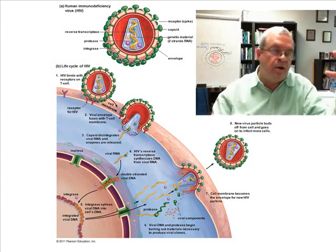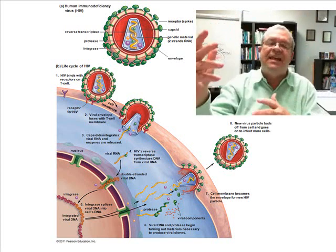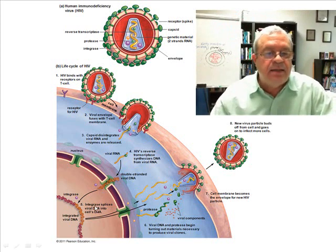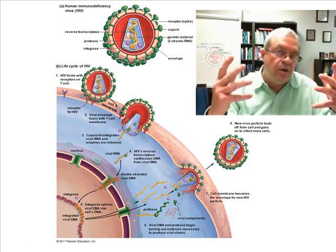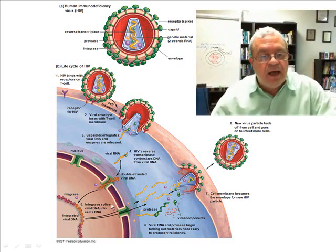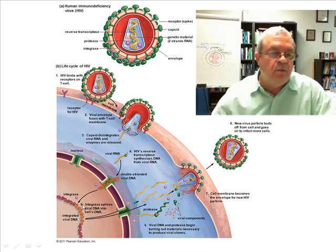It takes the viral RNA and reverses transcription — produces DNA. Then that viral DNA enters the nucleus and the second enzyme, integrase, does integration. It splices the viral DNA into the cell's DNA, so the viral DNA now becomes part of the cell's DNA — it's integrated with the cell's DNA.